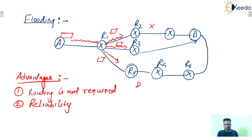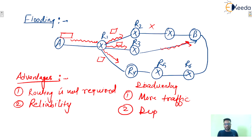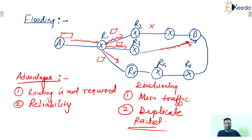But what are the disadvantages of flooding? First one is more traffic. If a packet is generated and copies are forwarded in all directions, there will be very high traffic in the network. Next, various duplicate packets will reach at the destination. So some duplicate packets will reach to the destination. Those are the disadvantages. So these are the advantages and disadvantages of flooding.